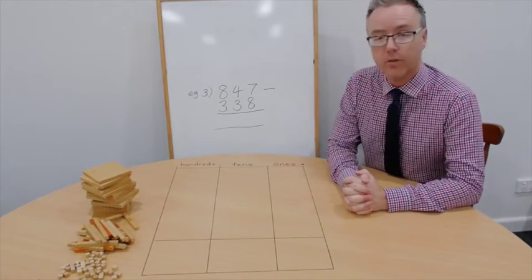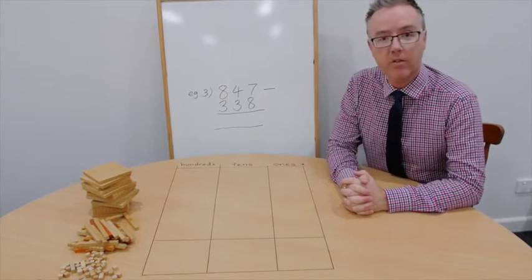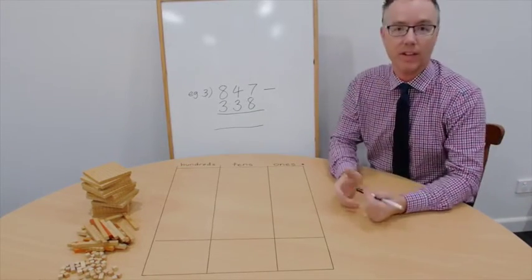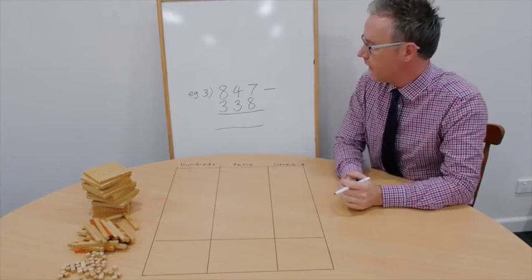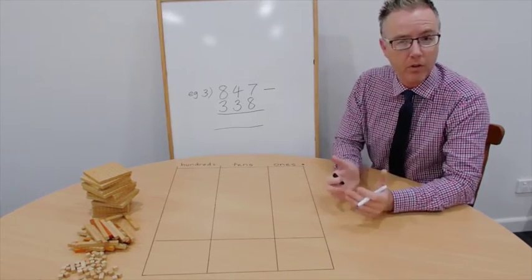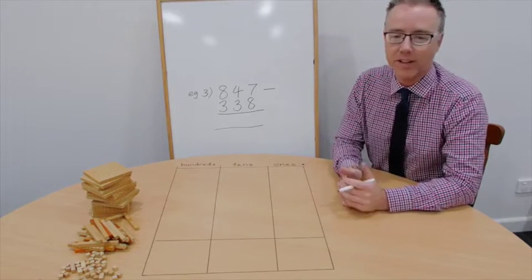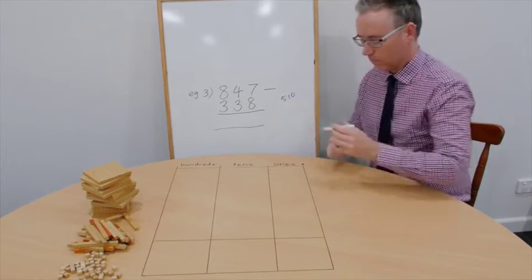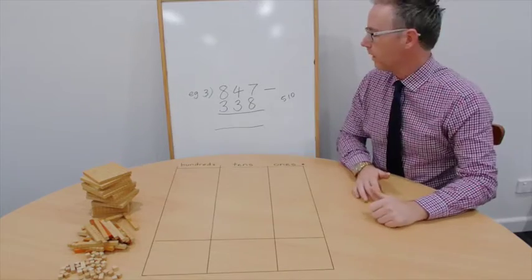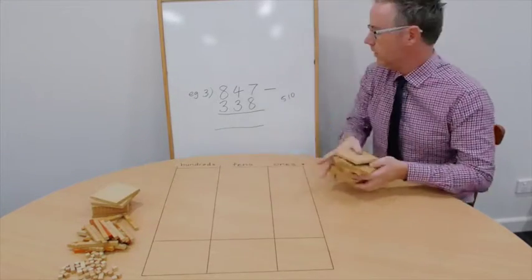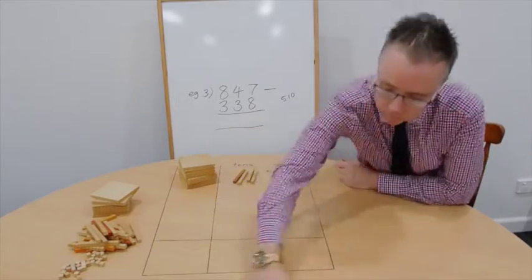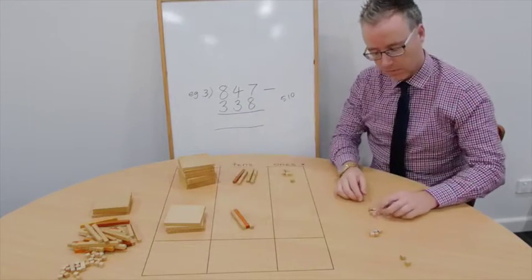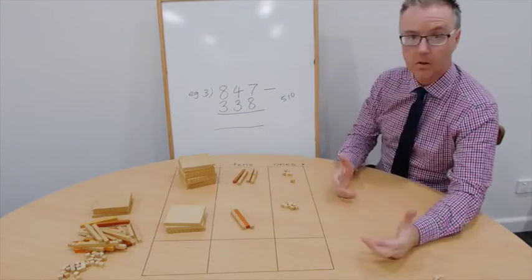So the third example. 847 take away 338. So before we start, let's estimate. And you would have seen in the last example, of course, the estimate was spot on. So 850 take away 350 or 340, whatever you're comfortable with. And, of course, the estimate is 500 or 510. So, let's put them out. Let's get started.